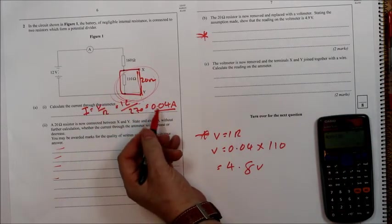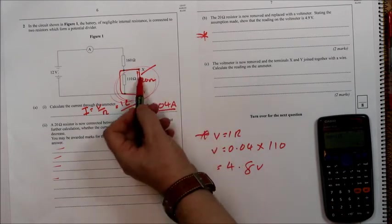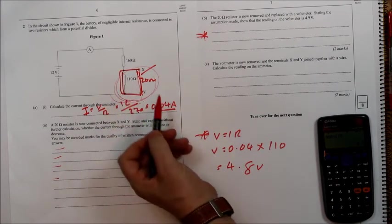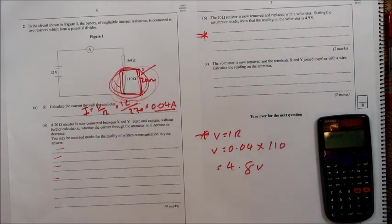Because of course in real life, the voltmeter does have resistance and putting it in parallel with this means that the overall resistance of this part of the circuit goes down.